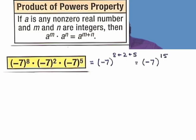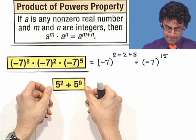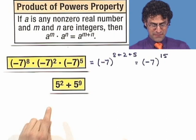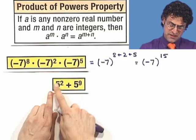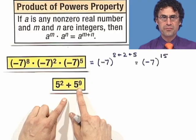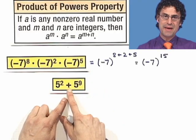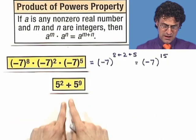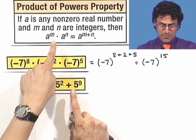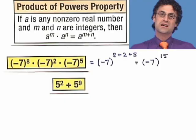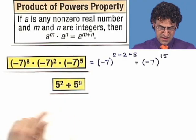What about 5 squared plus 5 to the ninth? We have the same base — base 5 in each — but since we're adding and not multiplying, this formula doesn't apply. I can't combine them because the arithmetic operation holding them together is addition, not multiplication. So the Product of Powers property does not apply here.